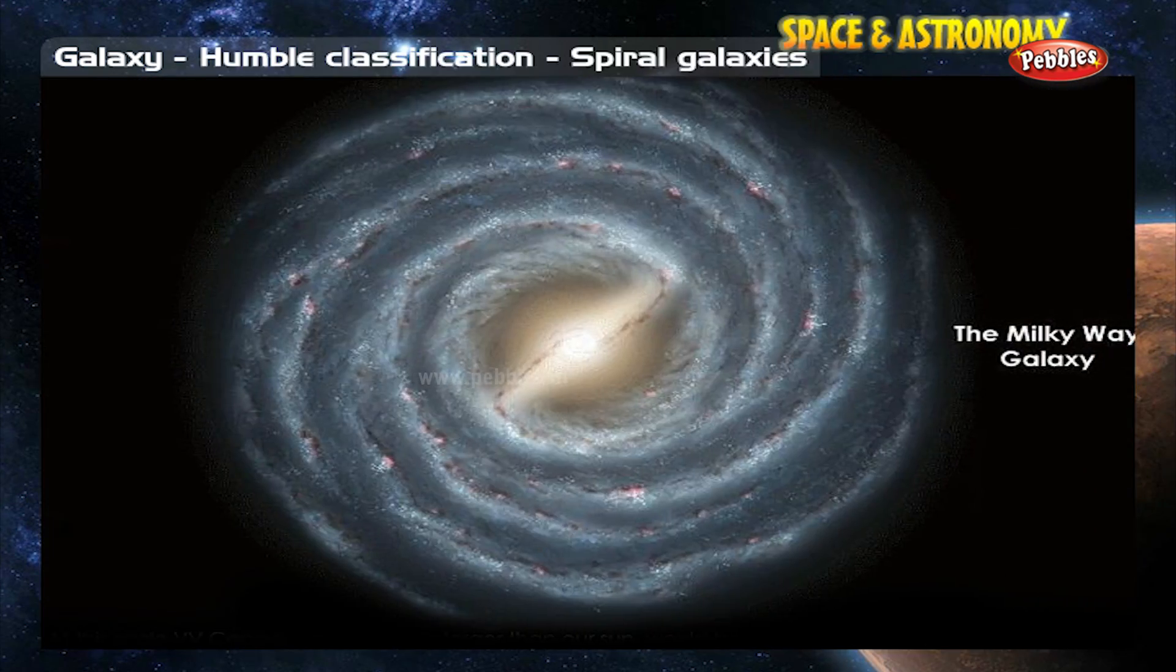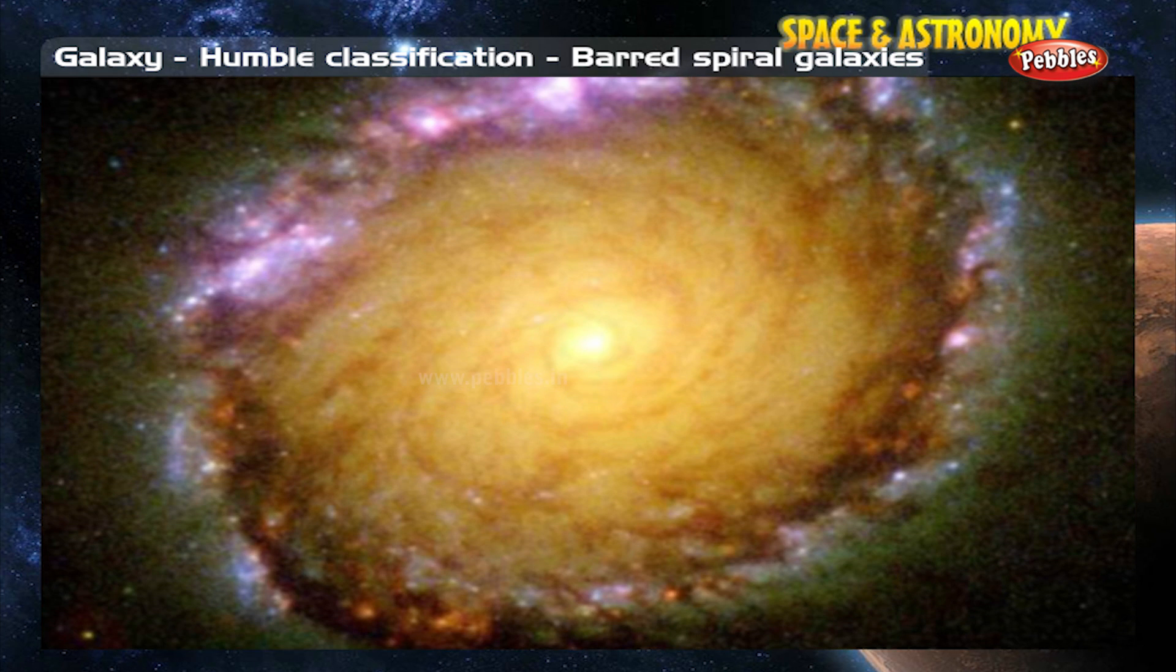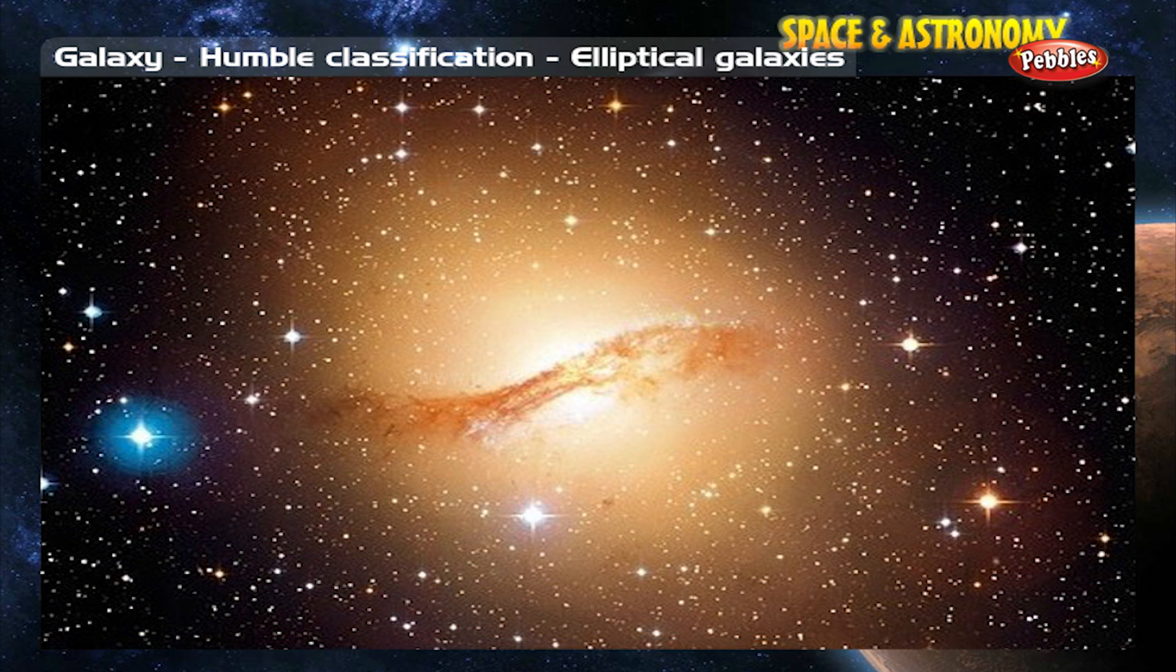There are four main classes classified by Hubble. First, spiral galaxies. Second, barred spiral galaxies. Third, elliptical galaxies. Fourth, irregular galaxies.